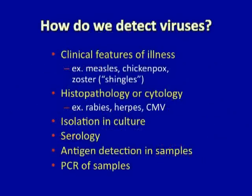So how do we detect viruses clinically? One way is to recognize the manifestations of the disease when it is pathognomonic — that is, when it presents in such a way that it's easily recognizable as being caused by that particular virus. Diseases with very characteristic clinical features from which the diagnosis can be made with almost absolute certainty are measles, chickenpox, and zoster, also known as shingles. Simply examining the patient will reveal clues that tell you the source of infection, and laboratory diagnostic testing is not necessary to confirm these diagnoses.